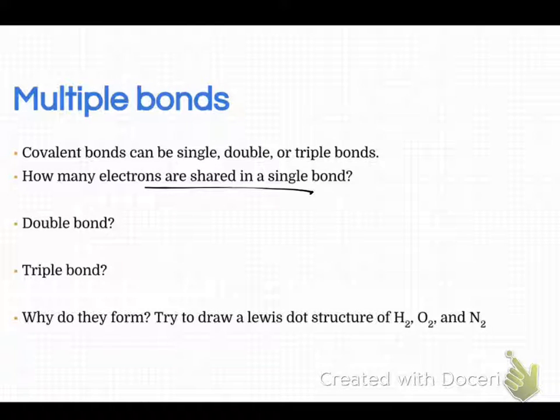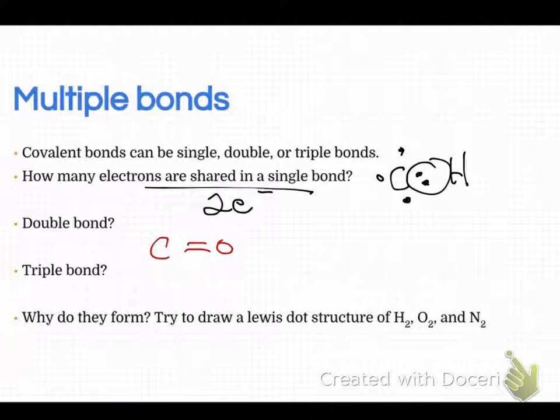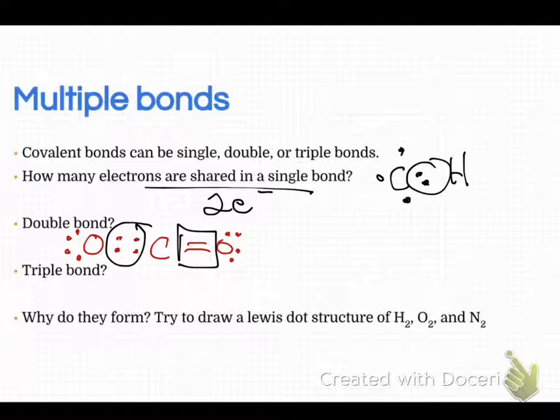We had a single bond between like carbon and hydrogen. So carbon and hydrogen have a single bond that has two electrons in it. On the other hand, we saw another example where carbon was with oxygen and it had what we said was a double bond, which you could draw as two lines or as dots. Either way is fine with me. So in both cases, these both have four electrons in the double bond.